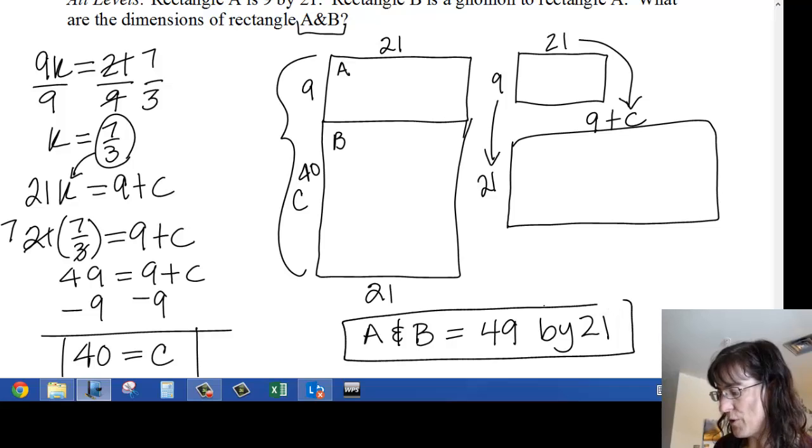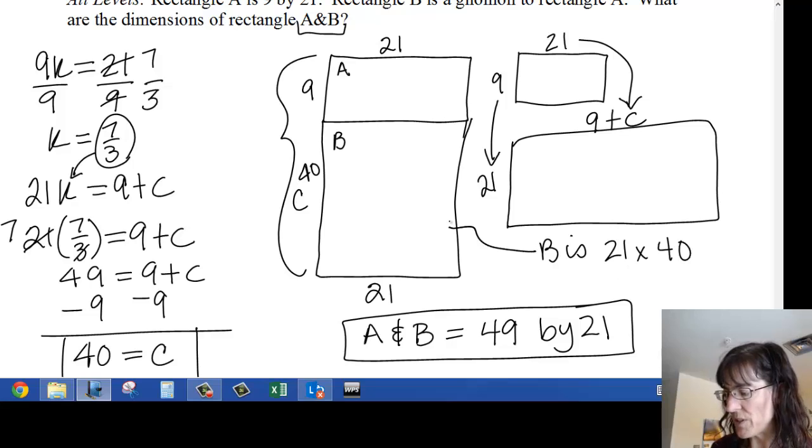And if you just wanted to know B by itself, this one is B, and B is 21. Oh, that one is not B. B is 21 by 40, which is this rectangle here, okay.